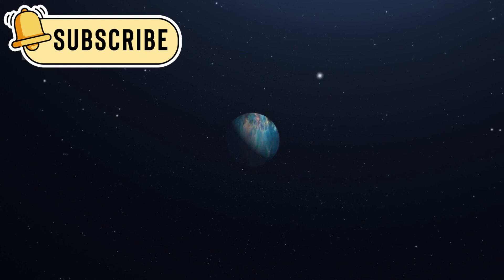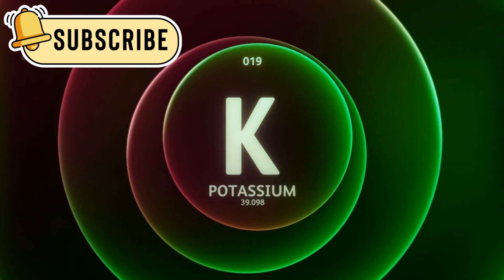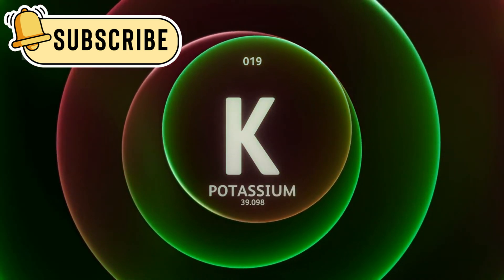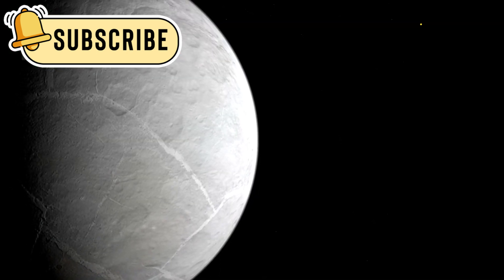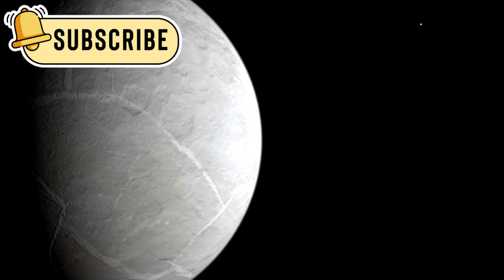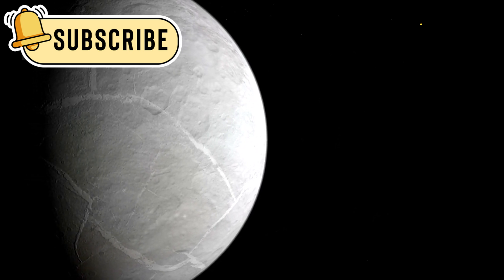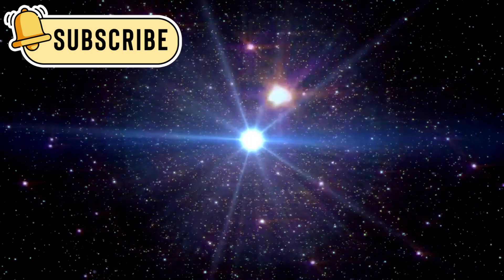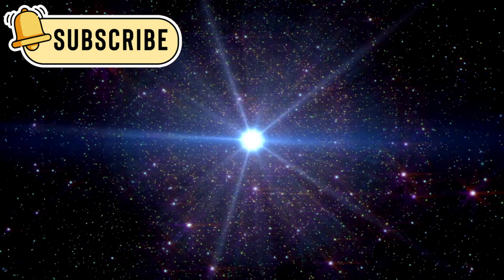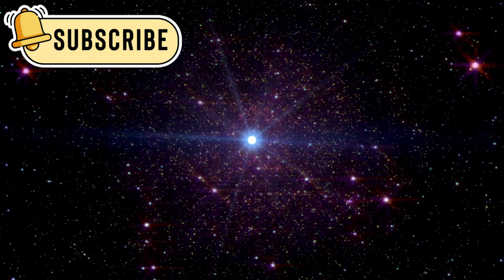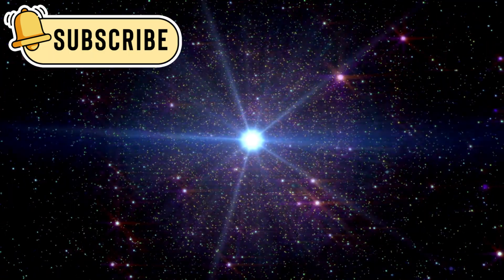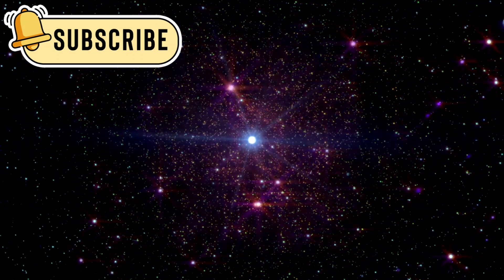Unlike Earth or Mars, K218b has no close comparison in our solar system. But what we've learned so far has been nothing short of incredible. The planet orbits within the habitable zone of its red dwarf star, the region where conditions might allow liquid water to exist. Even though K218b is much closer to its star than Mercury is to our Sun, the cool temperature of the red dwarf makes the planet's surface potentially mild.